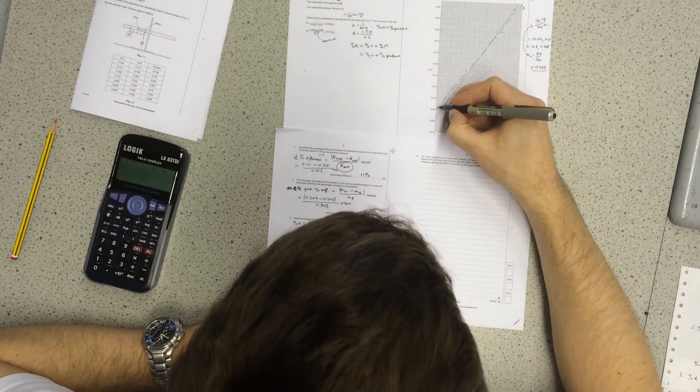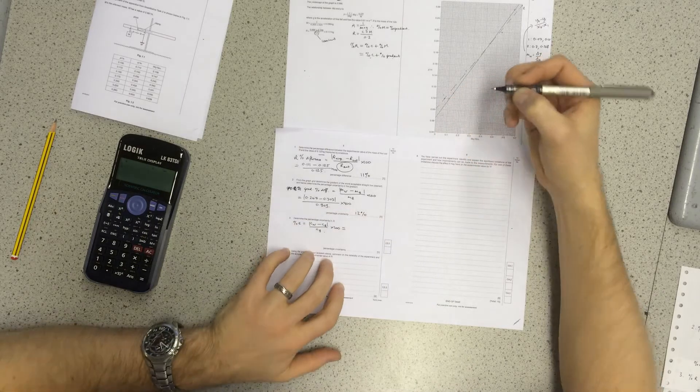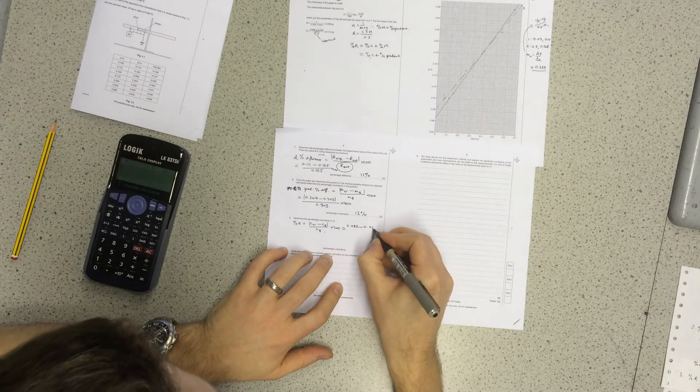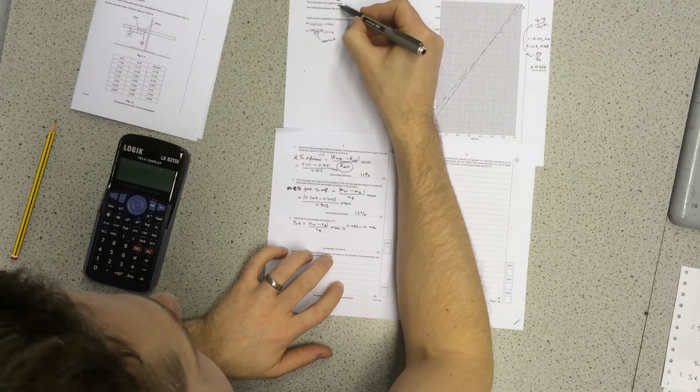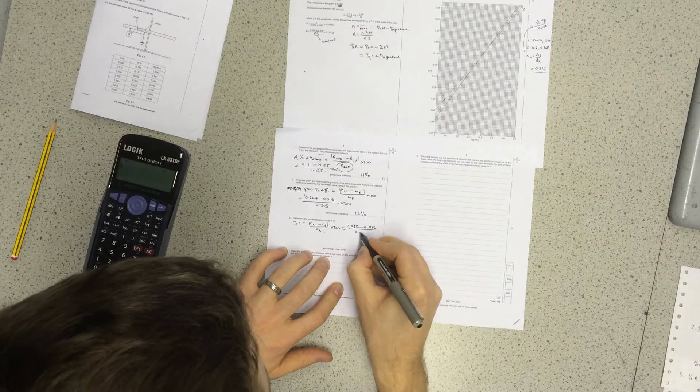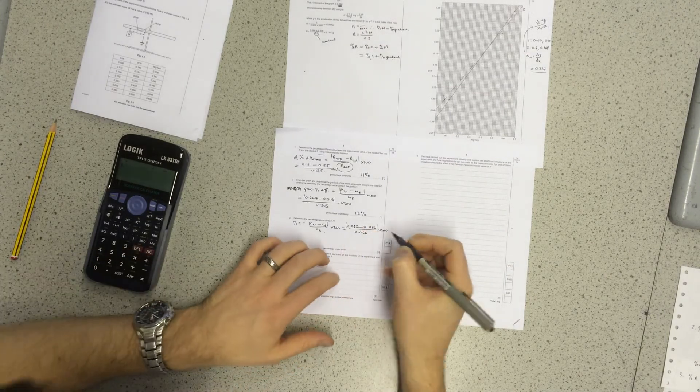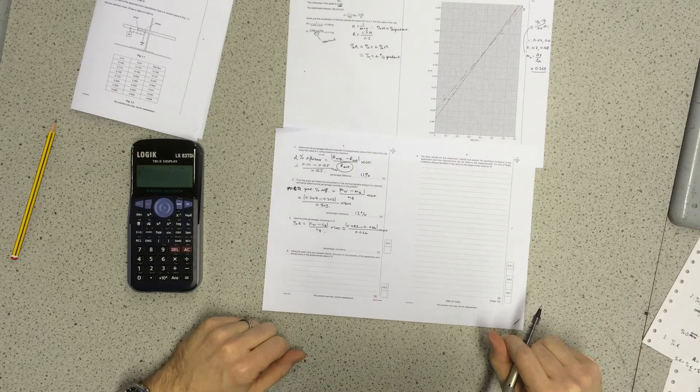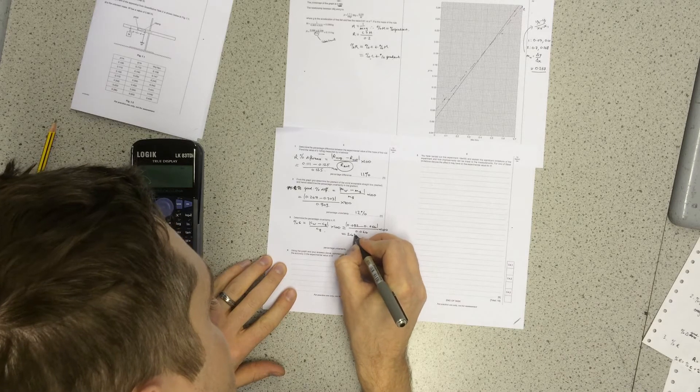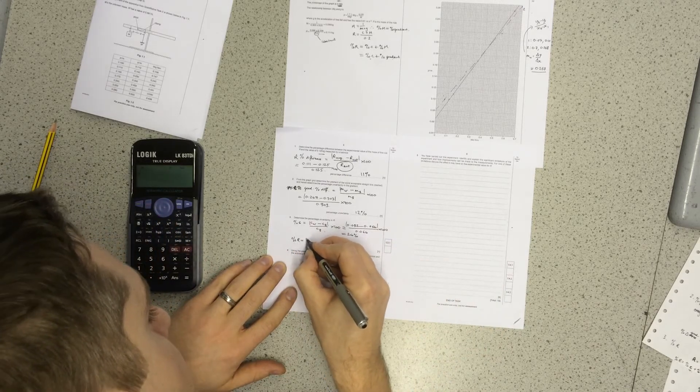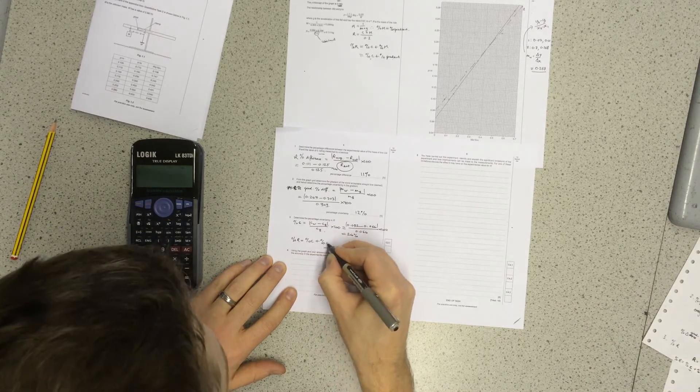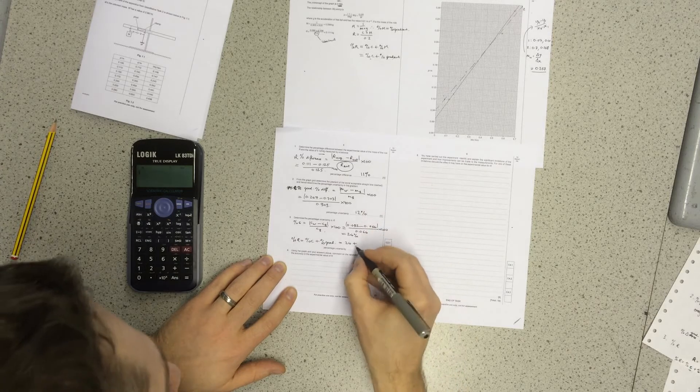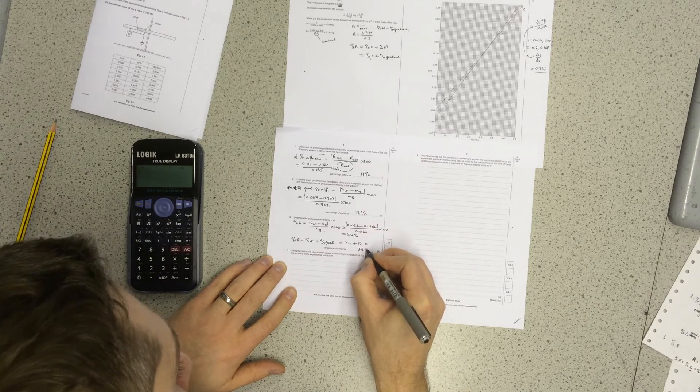The worst acceptable line is crossing at 0.082. So that's going to be 0.082 minus 0.066. Again, the best value from the best line is given up there. Work that out. That would work out as 24%. And then, percentage uncertainty in r, which is percentage uncertainty in c plus the percentage uncertainty in the gradient, is equal to 24% plus 12%, which is 36% in total.